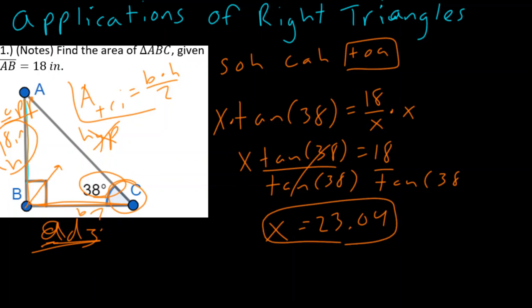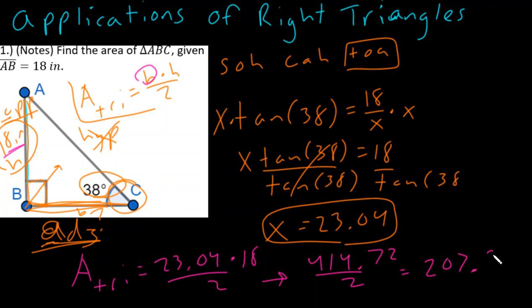Okay. Now from here, now that I know that the base, or the b term, is that, I can now go ahead and find my area. We know that the area of a triangle is equal to the base, which in this case is 23.04, times the height, which is 18, all divided by 2. So I'll do 23.04 times 18, and I'll now get 414.72. I'll divide that by 2. We'll get our final answer, which is 207.36. And in this case, since it's inches, we'll write inches squared.